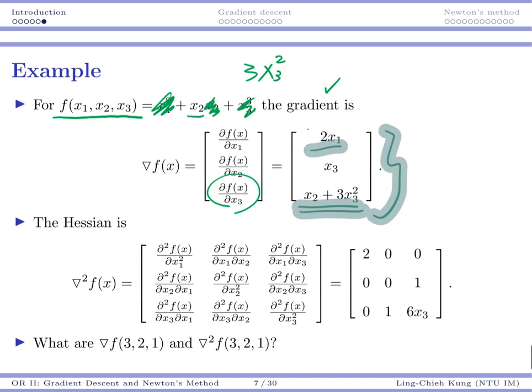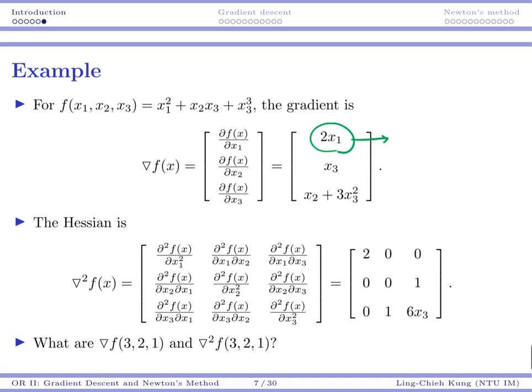For Hessian, pretty much you go from a gradient. For this one, you're going to differentiate with respect to x1, you're going to get 2. With respect to x2, you get 0 because there is no x2 here. With respect to x3, you're going to get 0 again.